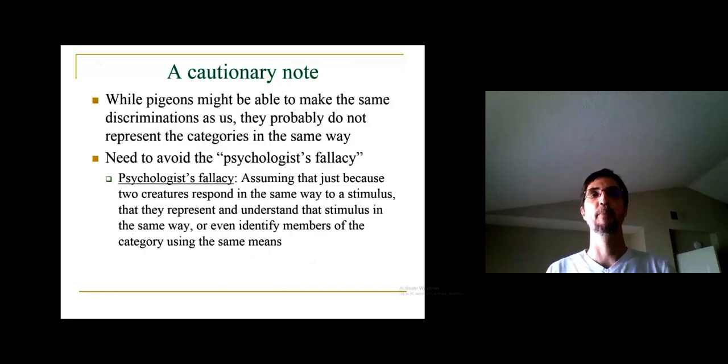Now here's the cautionary note: while pigeons may be able to make the same discriminations as us, categorizing one painting as opposed to another, they probably don't think or represent these categories in the same way that we do. This is that fallacy I told you about—we need to avoid what's called the psychologist's fallacy. This is the fallacy of assuming that just because two creatures respond in the same way to a stimulus, that they thereby represent the stimuli in the same way, or that they even use the same features to identify members of those categories. It's assuming that just because two creatures respond in the same way to a stimulus, that they represent and understand that stimulus in the same way, or even identify members of the category using the same means. The same behavior can be mediated by many different processes, something that we've seen already repeatedly in this course.